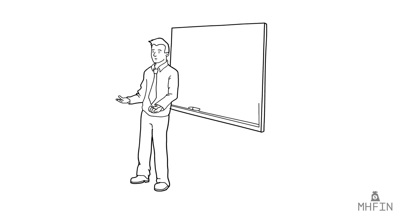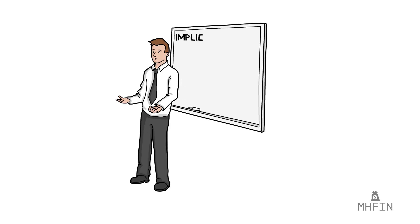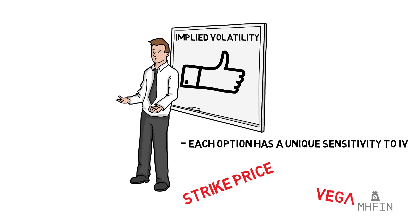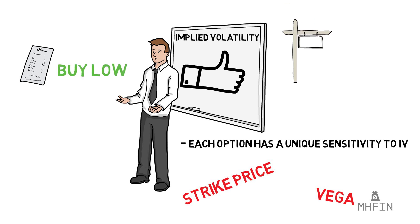Unfortunately, you will not understand implied volatility just from watching this video or any other 5–10 minute YouTube tutorial. To get a grasp on it, I encourage you to read the linked resources in the description. IV affects options in so many ways — each listed option has a unique sensitivity to IV changes depending on a long list of variables. Strike prices, vega, and a whole slew of other parameters are going to impact how much of an effect IV has, and this video is more of a general overview of the concept. The general consensus is to use IV to your advantage by buying when it's low and selling when it's high, but like many other buy-low sell-high strategies, this is easier said than done.